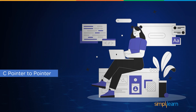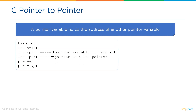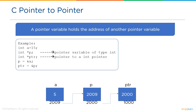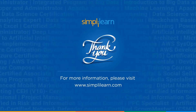Let's now look at pointer to pointer. Pointer to pointer is a pointer variable that holds the address of another pointer variable. First we have declared integer pointer variable p, and in the second declaration we have ptr which holds the address of another integer pointer variable p. Looking at the diagram: variable a holds value 5 at address 2009, pointer variable p holds the address of variable a, and another pointer variable ptr holds address 2000 of the integer pointer variable p.